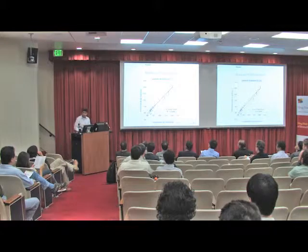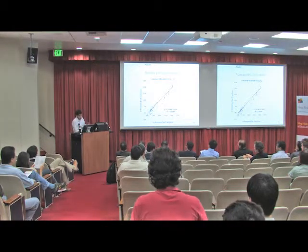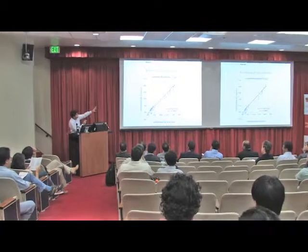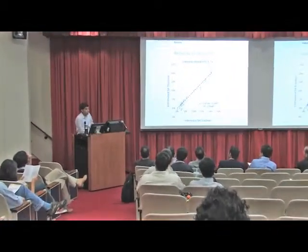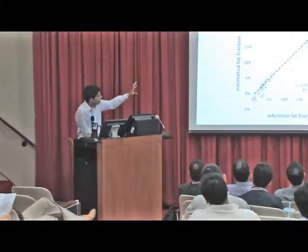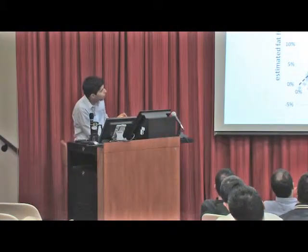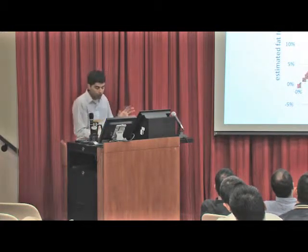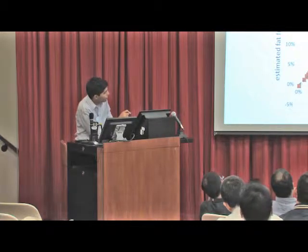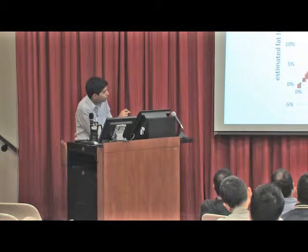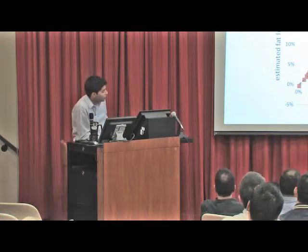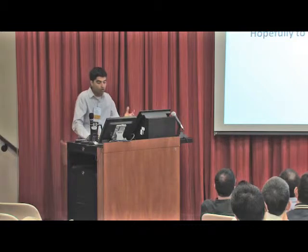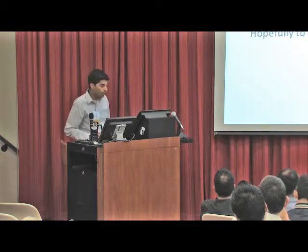We've repeated this for multiple slices over multiple subjects, plotting estimated fat fraction versus reference fat fraction. At an acceleration factor of 3.1x, the current clinical standard shows points that are close to the identity line but not great. Using our proposed approach, we get a much better result as reflected by our linear regression analysis — the slope, intercept, and goodness-of-fit measure. Our ongoing work involves further testing, and we hope to become the new clinical standard for accelerated water-fat imaging.